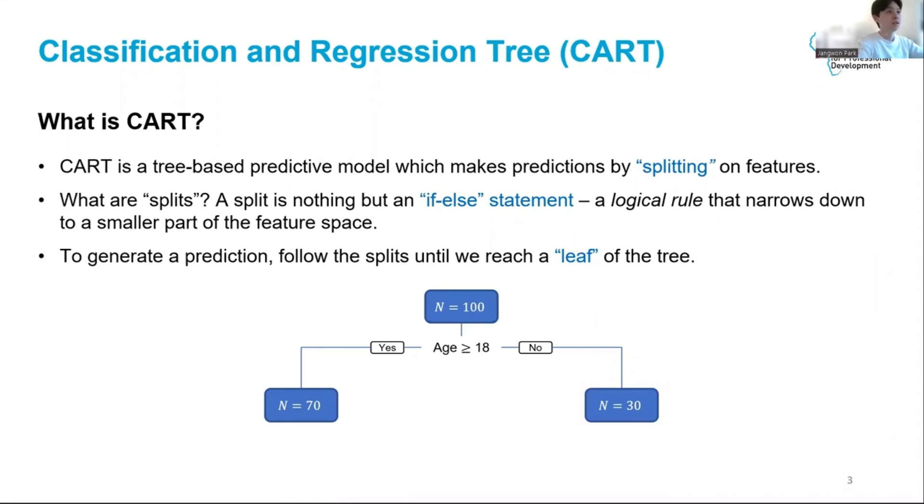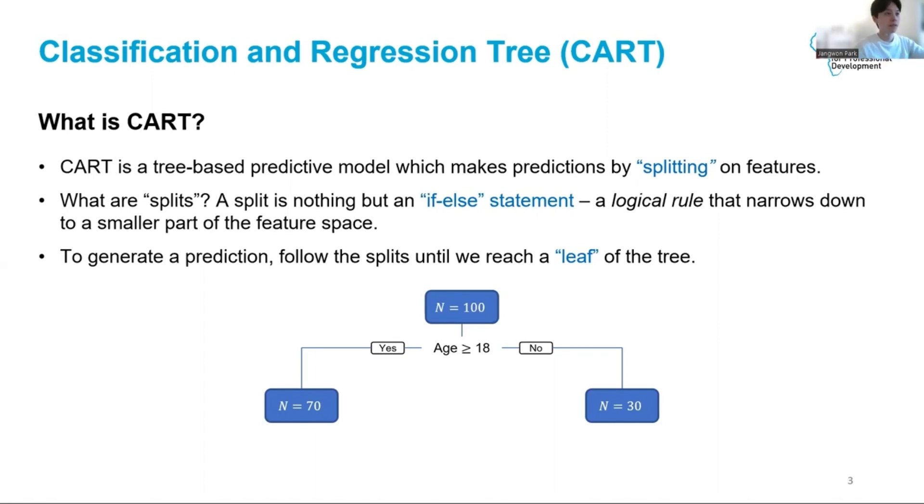Simply put, CART is a tree-based predictive model that makes predictions by splitting on features. We will use the term feature to stay consistent with part one of the machine learning lesson. As a recap, a feature is what a model uses to actually generate a prediction. Other commonly used terms include independent variables or predictors.